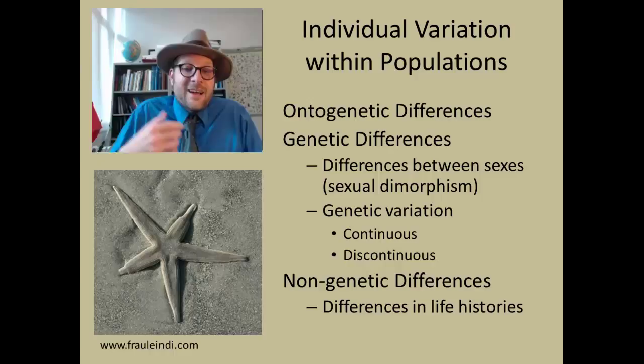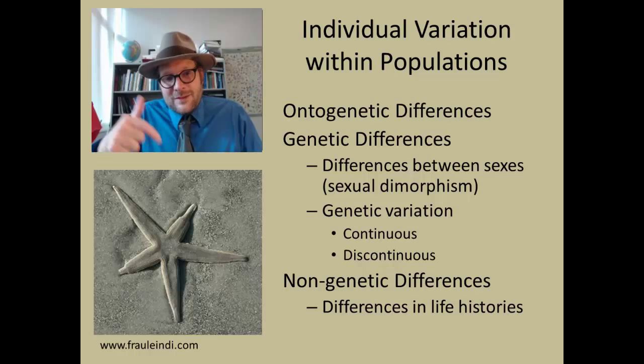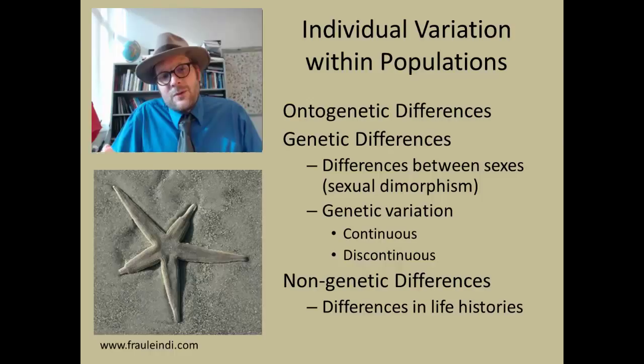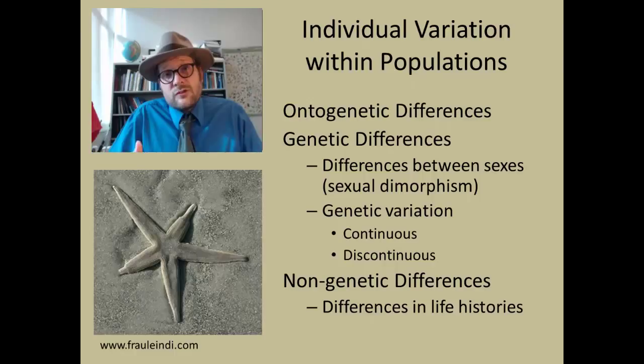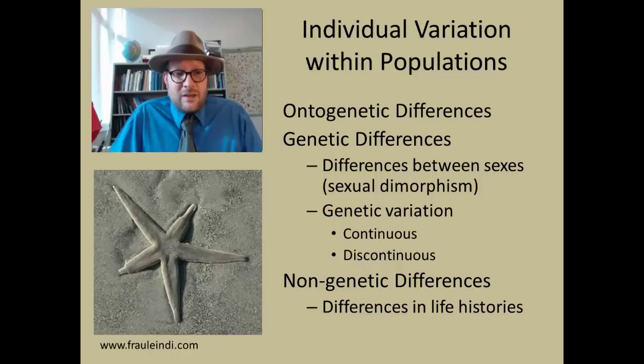Here is an example of a starfish that at some point in its life sustained damage on two of its arms. You can see it started to regrow those arms. These include things like pathologies or injuries — it's not a new species or a genetic difference, it's a difference in the lifespan of that particular individual. If you found this starfish in the fossil record, you wouldn't necessarily recognize it as some aberrant, weird individual — it actually just had an injury. This is something to be aware of.